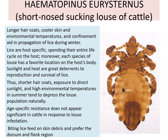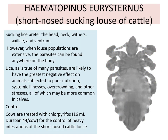Age-specific resistance does not appear significant in cattle in response to louse infestation. Biting lice feed on skin debris and prefer the dorsum and flank region. Sucking lice prefer the head, neck, withers, axillae and ventrum. However, when louse populations are extensive, the parasite can be found anywhere on the body. Lice, as is true of many parasites, are likely to have the greatest negative effect on animals subjected to poor nutrition, systemic illness, overcrowding and other stresses, all of which may be more common in calves.